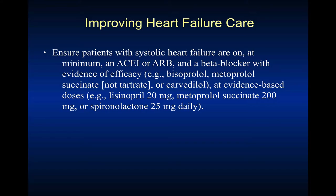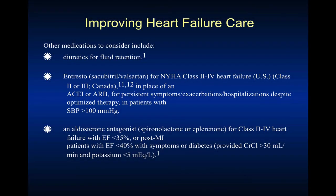We want to ensure systolic heart failure patients are on a minimum of an ACE or ARB and a beta blocker. The beta blockers with best efficacy in heart failure are bisoprolol, metoprolol succinate (not the tartrate), or carvedilol. We also want to get them at evidence-based doses — for example, lisinopril 20 mg, metoprolol succinate 200 mg, and spironolactone 25 mg. Spironolactone is one we don't want to push above 25 mg — there's no evidence of greater benefit, and we get more side effect risks such as hyperkalemia.